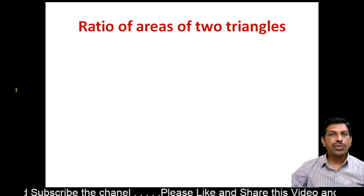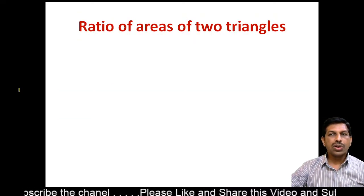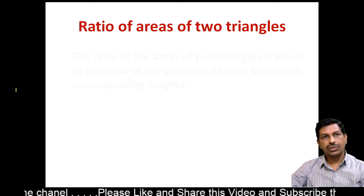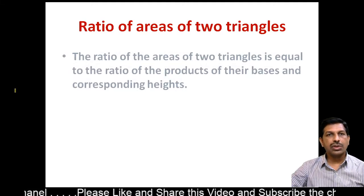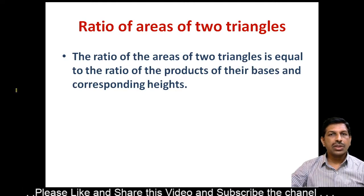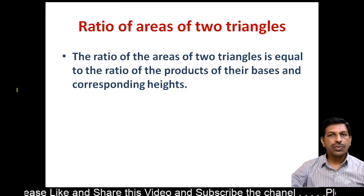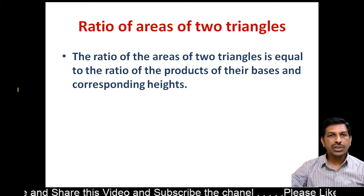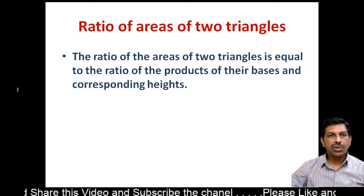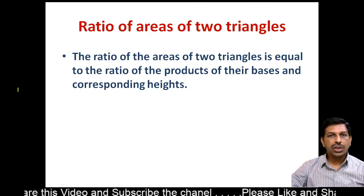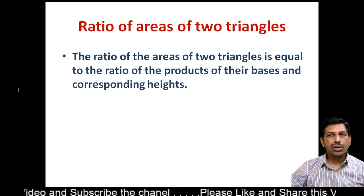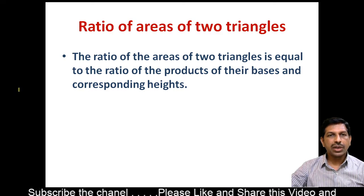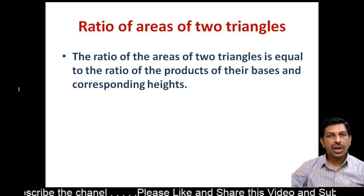Ratio of areas of two triangles. The property is: the ratio of the areas of two triangles is equal to the ratio of the product of their bases and corresponding heights.